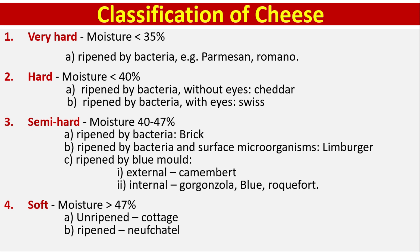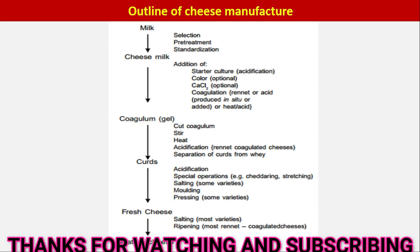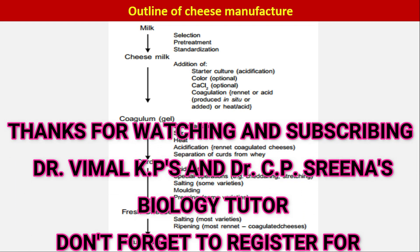Semi-hard continued: ripened by bacteria — Brick; ripened by bacteria and surface microorganisms — example Limburger; ripened by blue mold external — example Camembert; internal — Gorgonzola, Blue, and Roquefort cheese. Soft cheese: moisture content greater than 47%; unripened example Cottage cheese, and ripened example Neufchâtel.